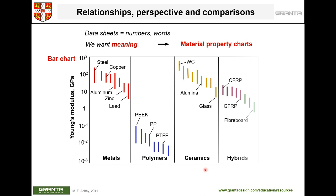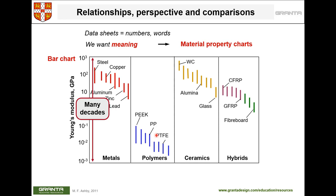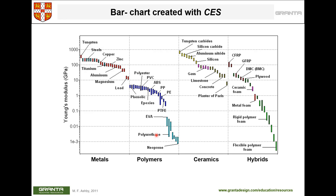To compare materials meaningfully, it helps to plot them. Here is a plot of Young's modulus for different materials on the y-axis in GPa — showing metals, polymers, ceramics, and hybrids. Metals have a higher Young's modulus and polymers have a lower one. Because we are comparing materials across a very long range — from elastomers to ceramics — we use a logarithmic scale covering many decades.